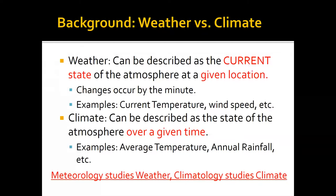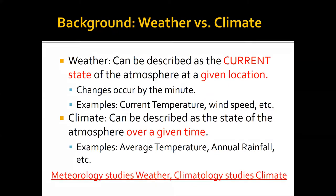Weather changes from moment to moment, from location to location, and it describes the condition of the atmosphere at a given location and a given time. Climate, on the other hand, is more the average weather — it represents the average weather over time. Things such as average temperature, average rainfall, and so on are things that define a location's climate.